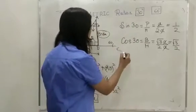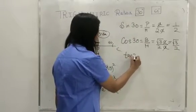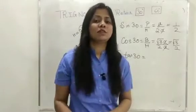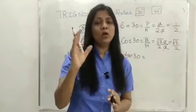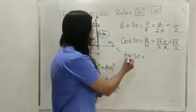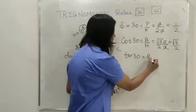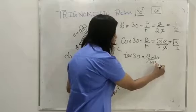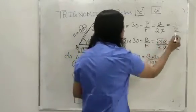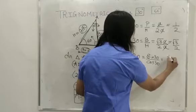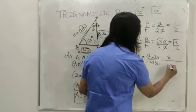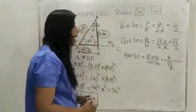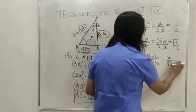Now let's find the value of tan 30. The relationship between tan, sin, and cos is: tan equals sin upon cos. So tan 30 equals sin 30 upon cos 30. The value of sin 30 is 1/2 and cos 30 is root 3 over 2, so the value of tan 30 is 1 upon root 3.